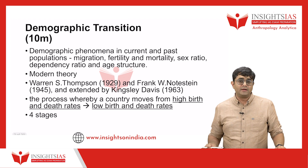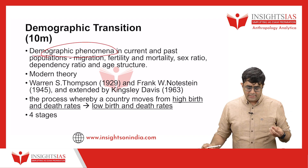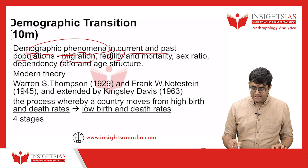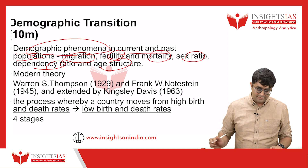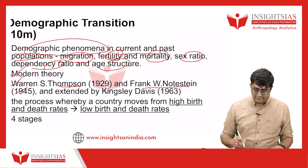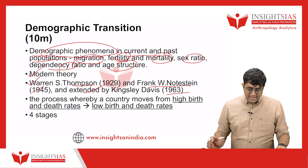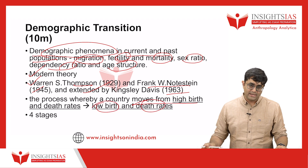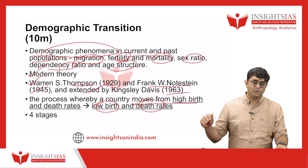Now let's look at some important content to add. Demographic transition theory provides insight into demographic phenomena such as migration, fertility, mortality, sex ratio, dependency ratio, and age structure. It is a modern theory given by Warren Thompson in 1929, Frank Notestein in 1945, and further improvised by Kingsley Davis in 1963. Demographic transition is defined as the process whereby a country moves from high birth rate and high death rate to a low birth rate and low death rate in stages.